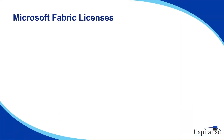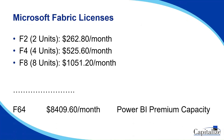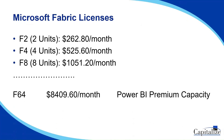Now let's look at Microsoft Fabric licenses. Fabric's capacity-based pricing is designed for larger organizations that need high-performance analytics. Here are some examples of the pricing structure: F2 gives you 2 units, F4 gives you 4 units, F8 gives you 8 units, all the way to F64 and more, where you'll find robust features associated with Power BI Premium capacity designed for large-scale data processing and analytics.